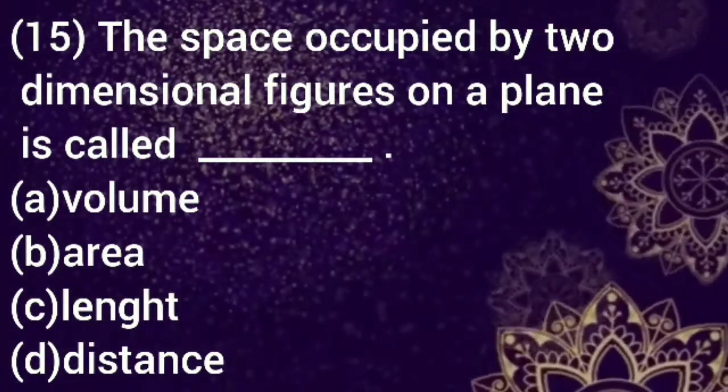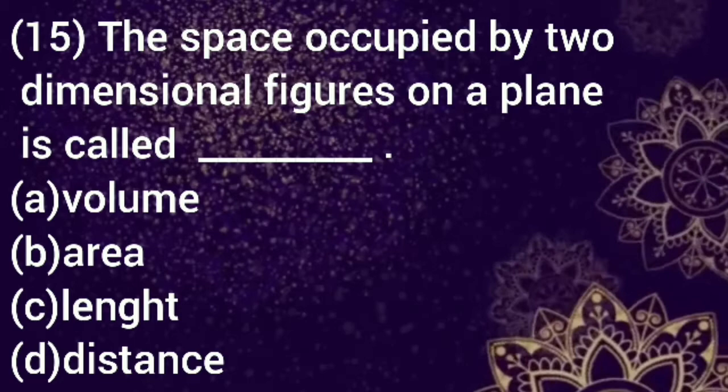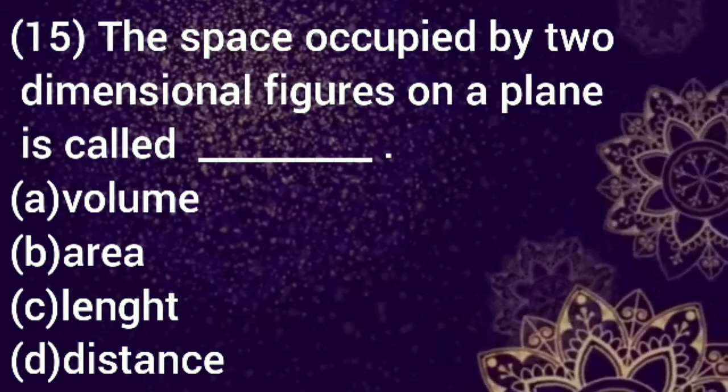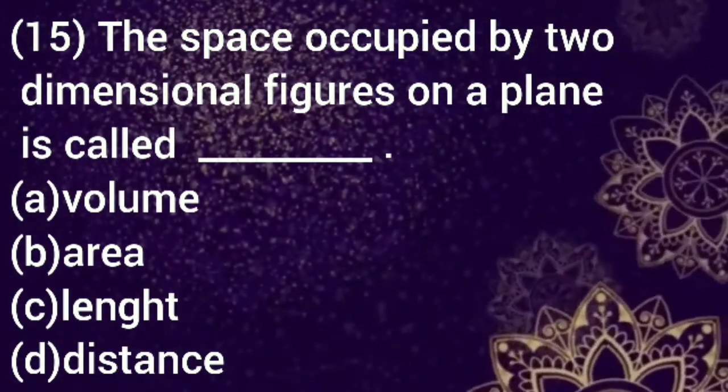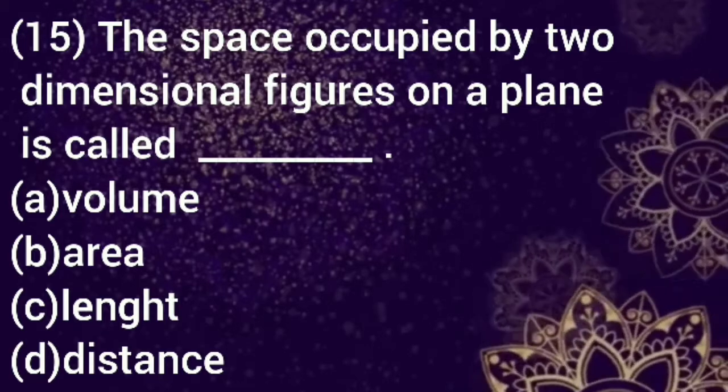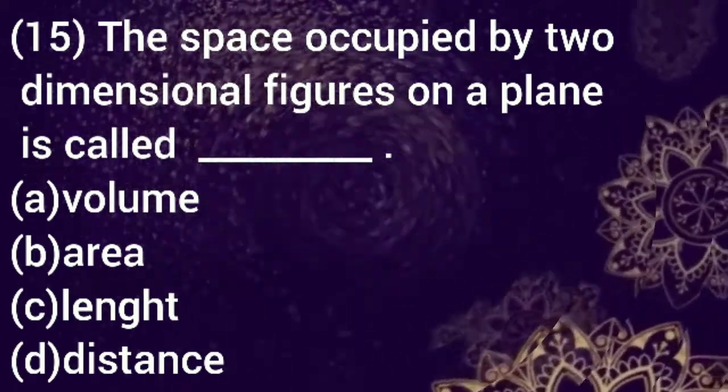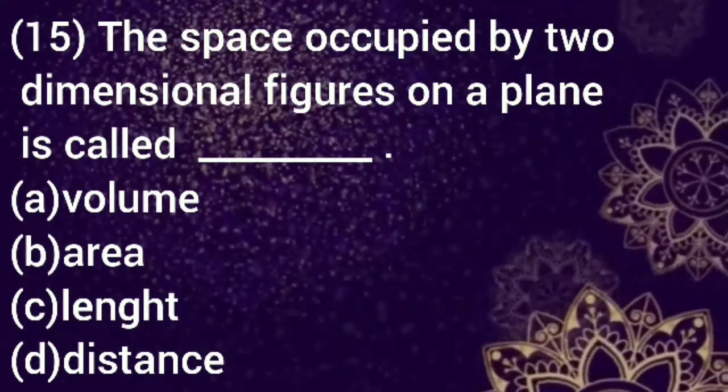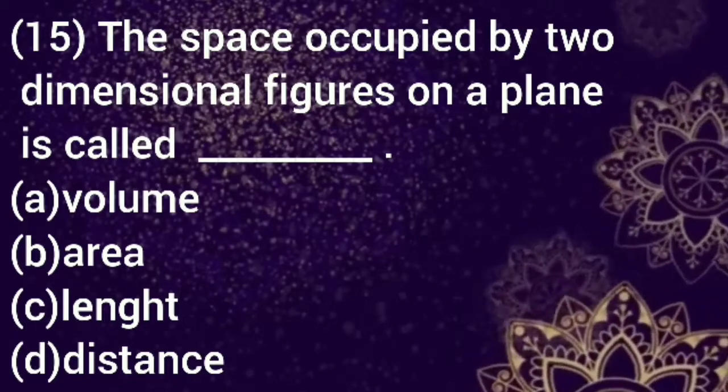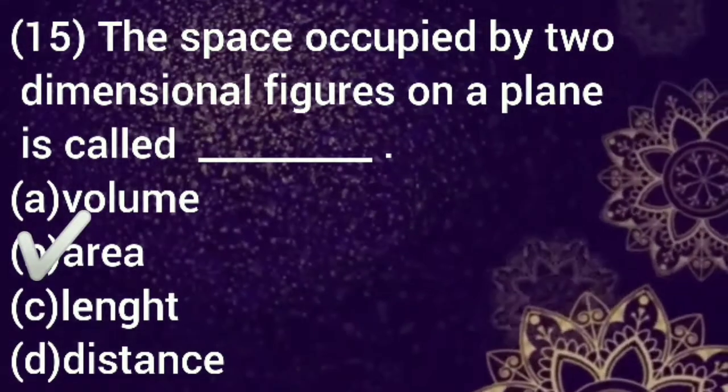Question number 15. Space occupied by two-dimensional figures on a plane is called dash. Option a: volume, b: area, c: length, d: distance. Select your answer. The correct option is b, area.